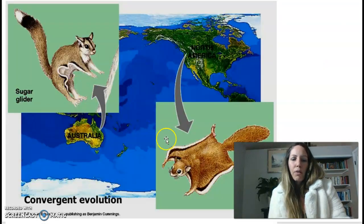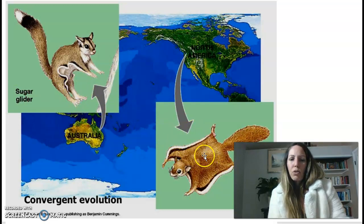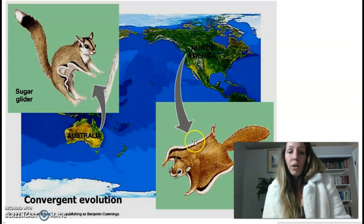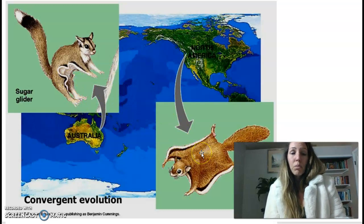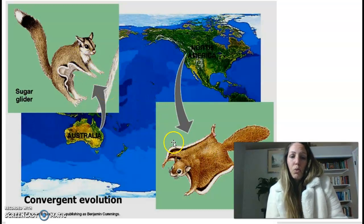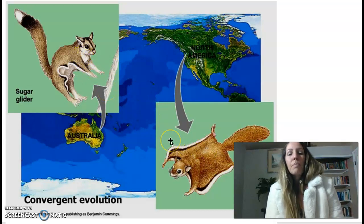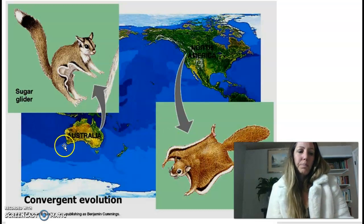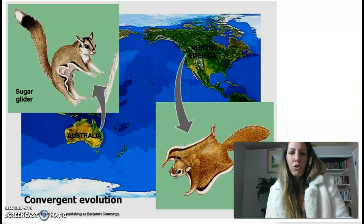Here's another example of convergent evolution. The sugar glider is from Australia; the flying squirrel is from North America. They look very similar, they act very similar, they're both gliding, and they pretty much look identical — they both look like squirrels — but genetically they are not related. So convergent evolution means you evolve the same traits, but you're unrelated.